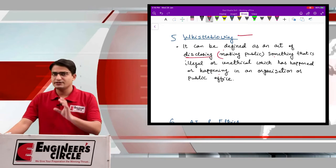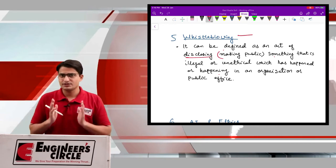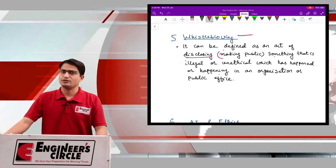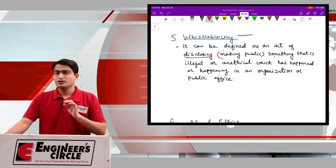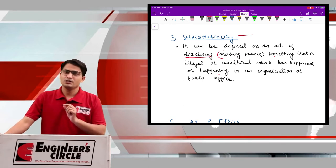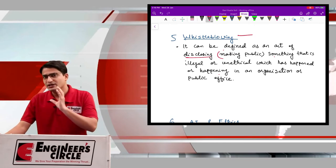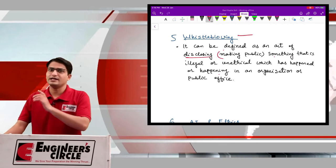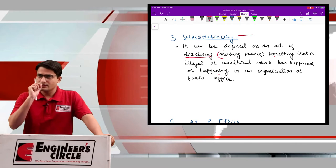So try to clearly understand. First of all, in whistleblowing, there is a person who is disclosing some information. Which type of information? Information which pertains to some illegal conduct happening in the organization. So let us take an example.